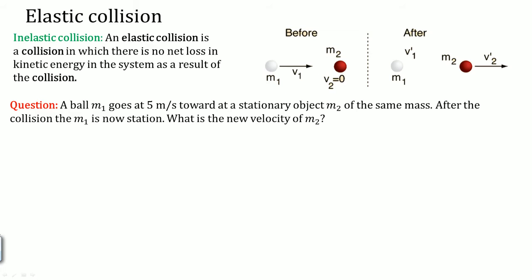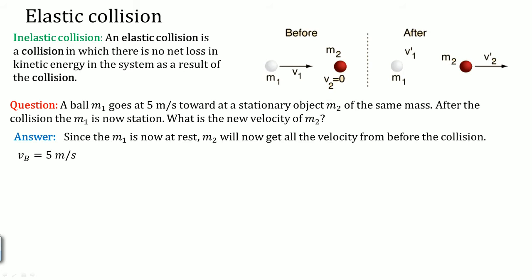Here, M1 hits a stationary object M2 of the same mass. After the collision, M1 is now stationary. Since M1 is now at rest, M2 will get all the velocity from before the collision. You can see in the equation that if the masses are the same, the velocities swap. So if M1 came in at 5 meters per second and M2 was at rest, after the collision M2 goes at 5 meters per second. Their collision allowed the complete transfer of their velocities.